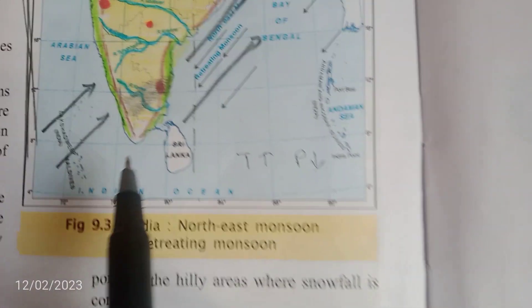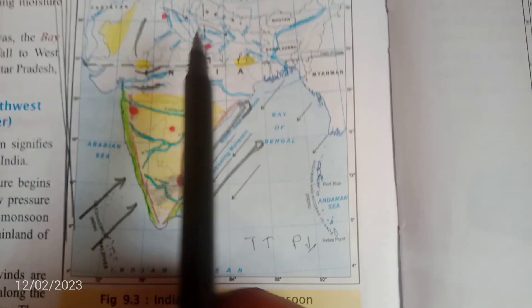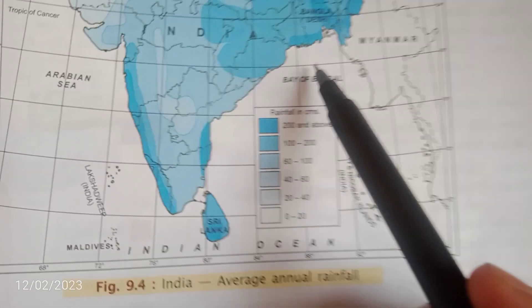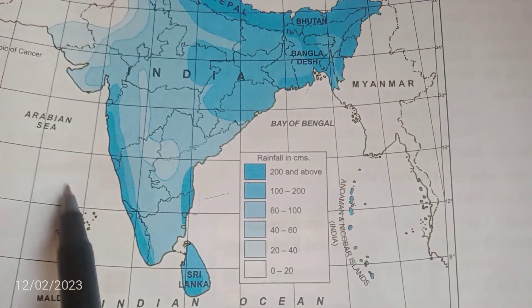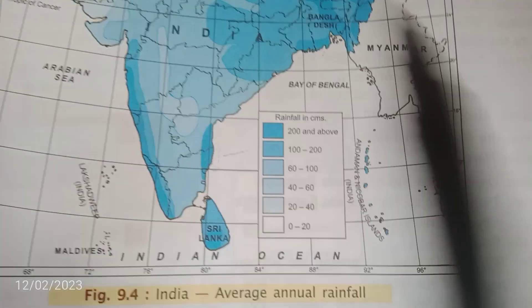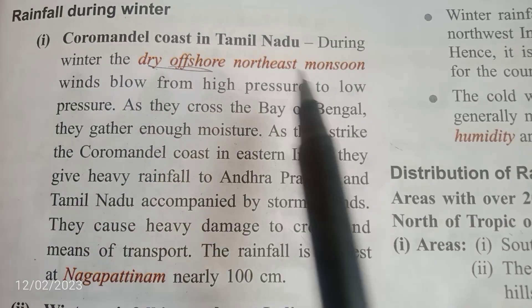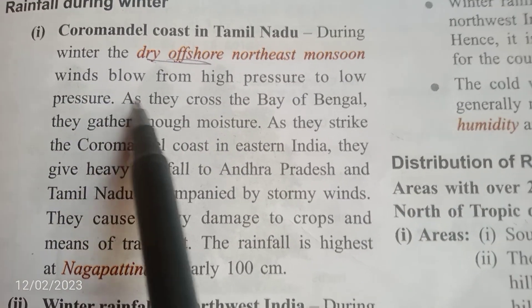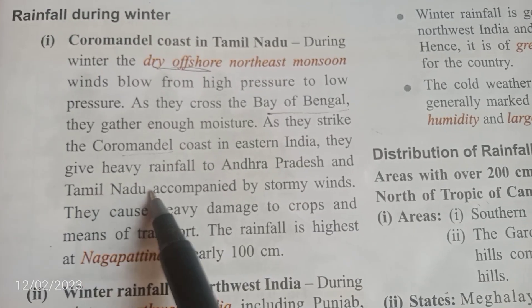The average temperature in Thiruvananthapuram remains at 21 degrees Celsius throughout the year. Regarding pressure conditions: when the sun is directly over the Tropic of Capricorn, which is situated over water bodies, pressure will be low over the ocean and high over the land. Northeast monsoon winds take moisture from the Bay of Bengal and give rainfall to the Coromandel coast. These are dry offshore winds because they pass through land, but some onshore winds carry moisture from the Bay of Bengal and give rainfall.